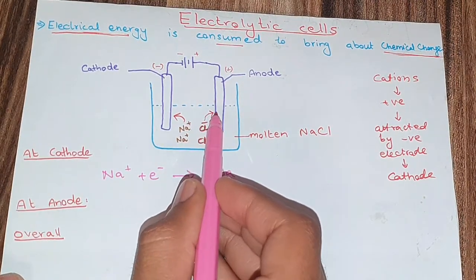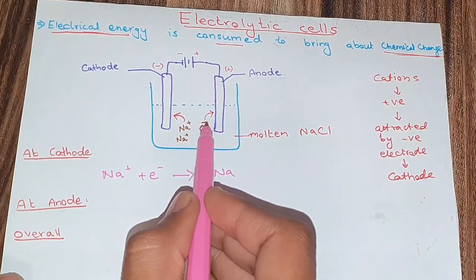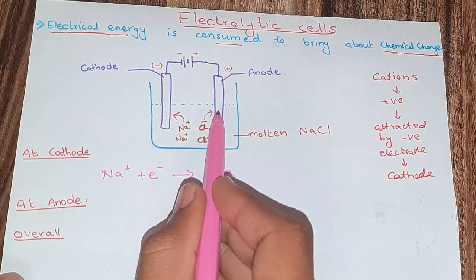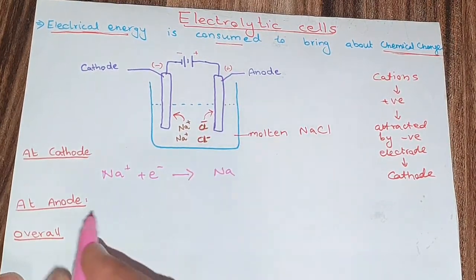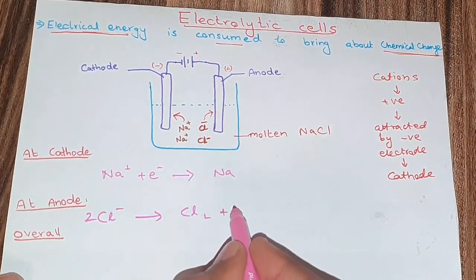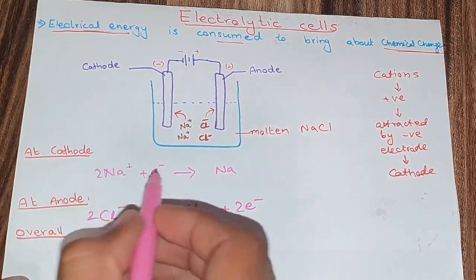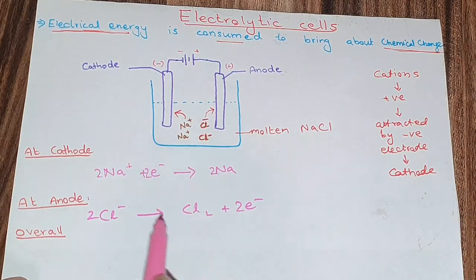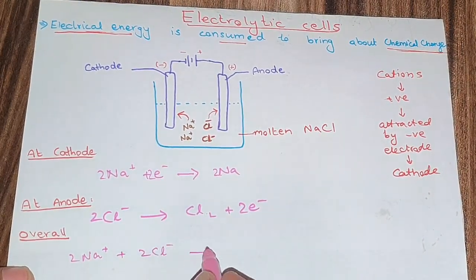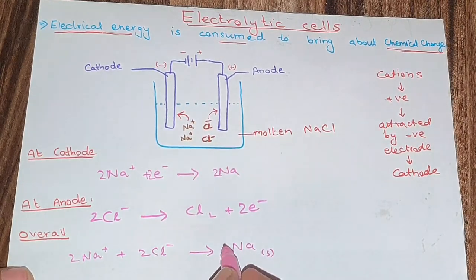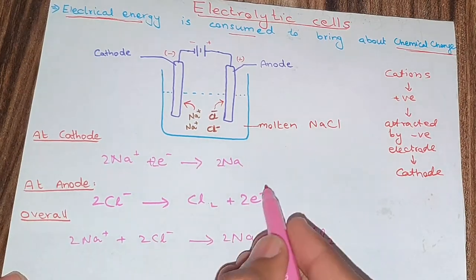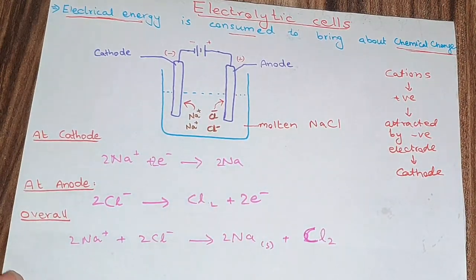At the anode, the chloride ions (Cl⁻) lose their extra electrons. The reaction is: 2Cl⁻ → Cl₂ + 2e⁻. Combining both half-equations, the overall reaction is: 2Na⁺ + 2Cl⁻ → 2Na(s) + Cl₂(g). The electrons cancel out, giving this balanced overall equation for the electrolytic cell.